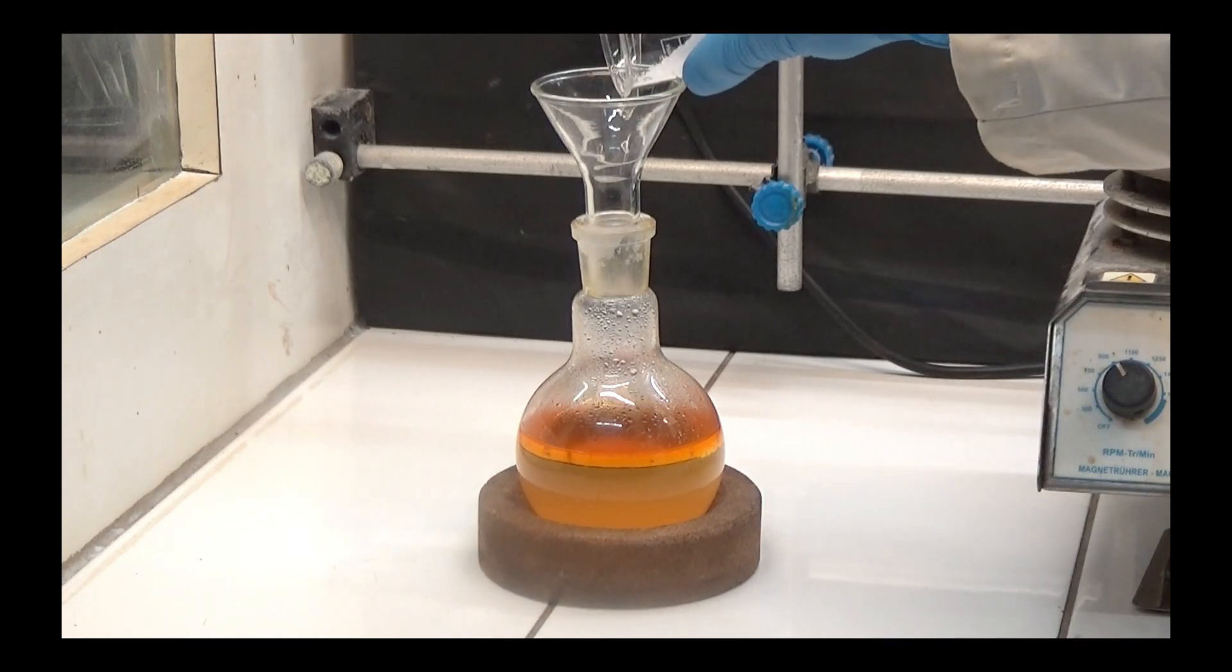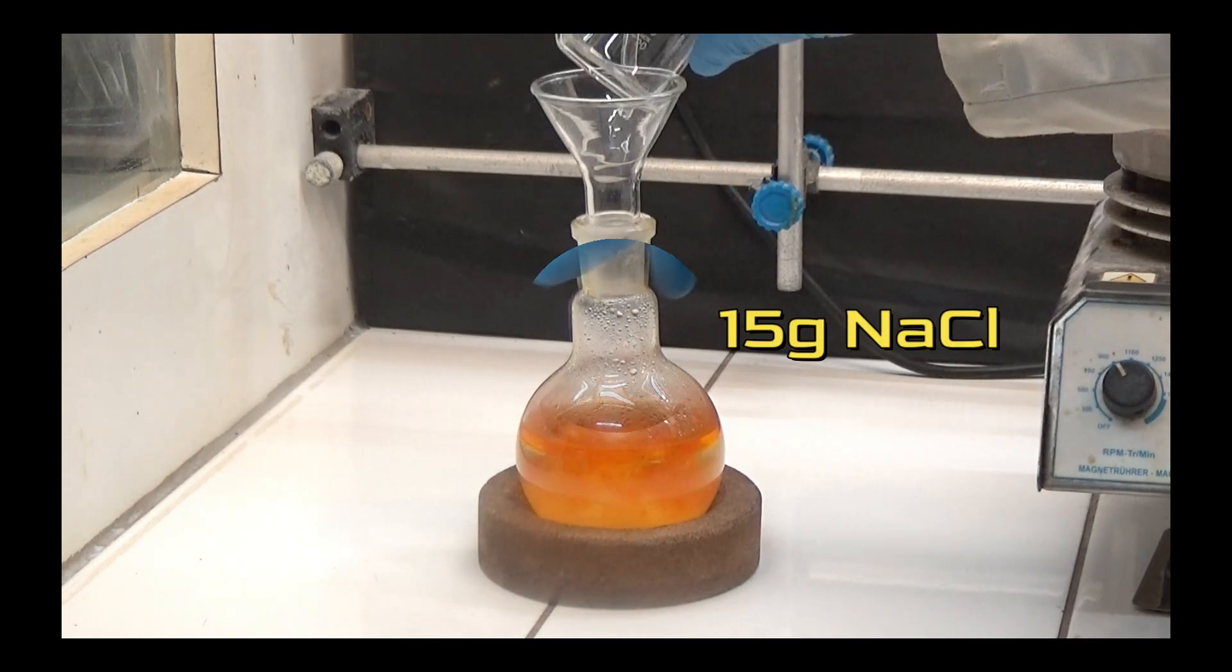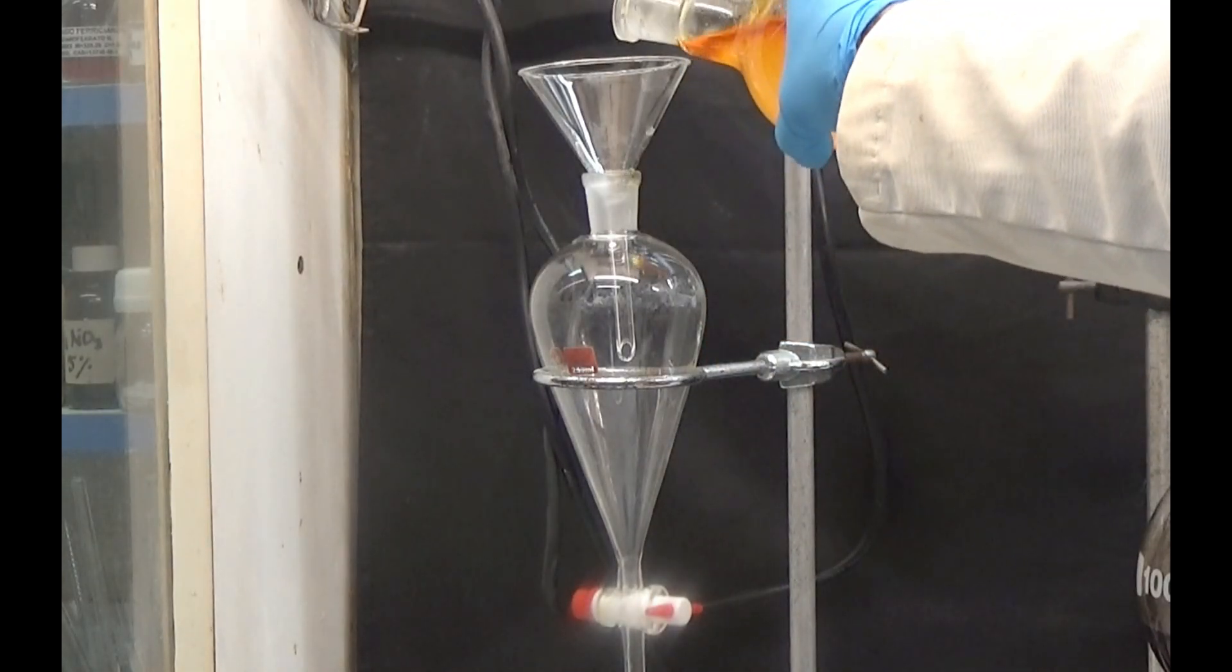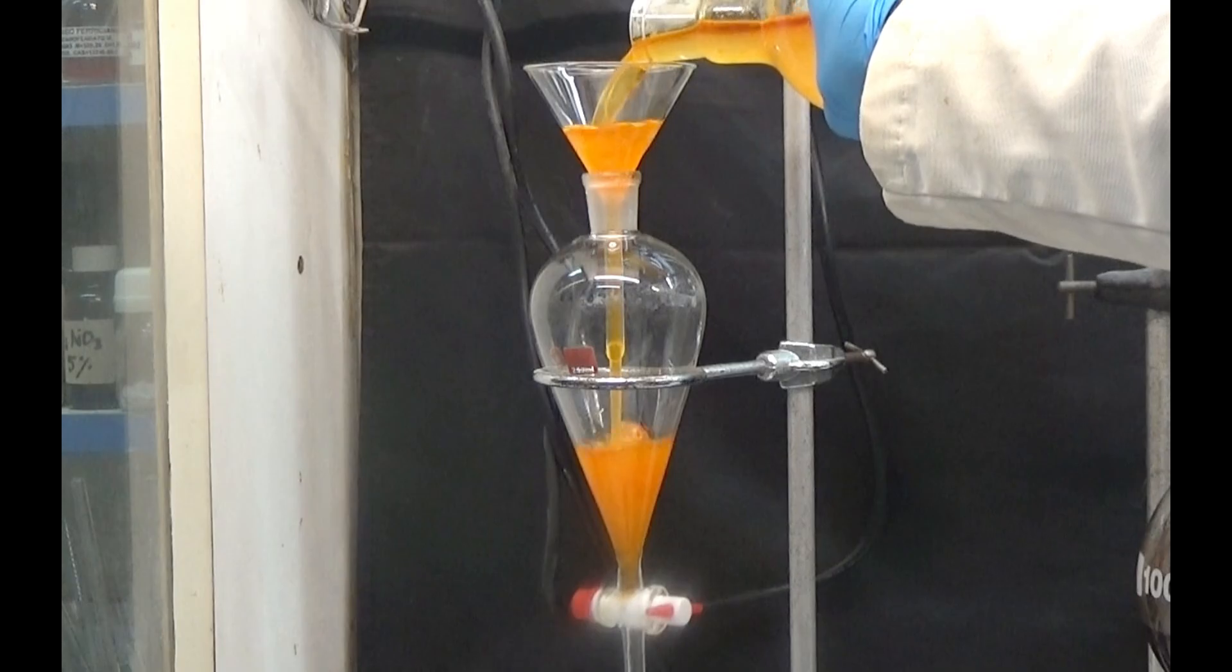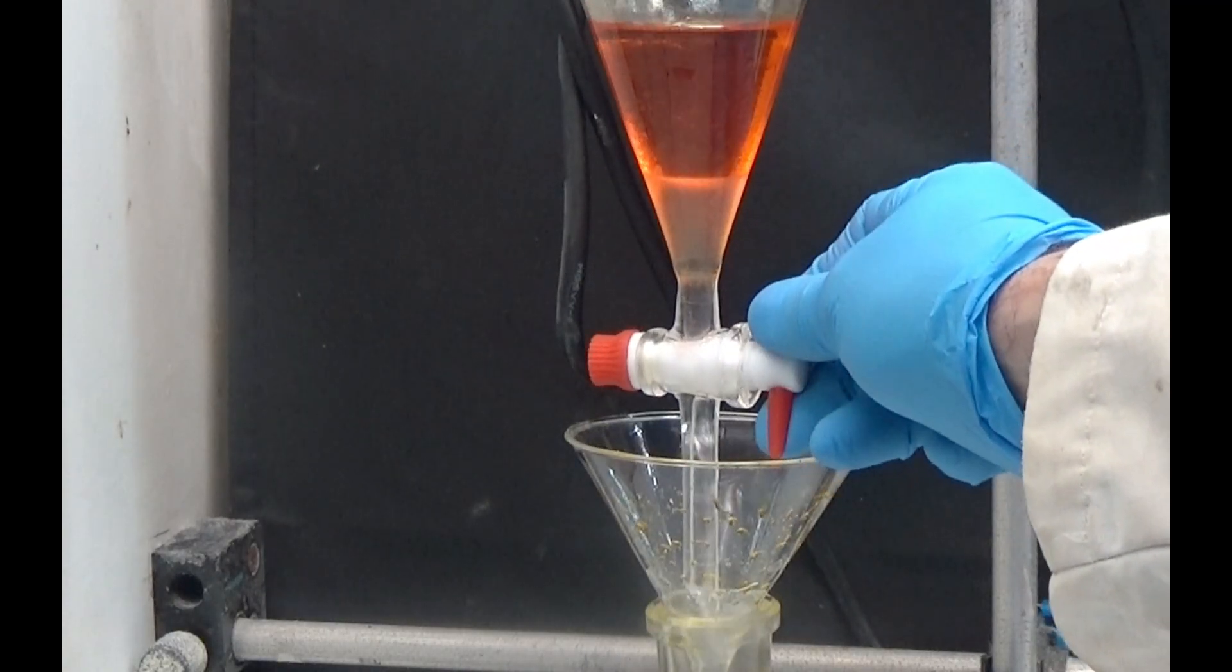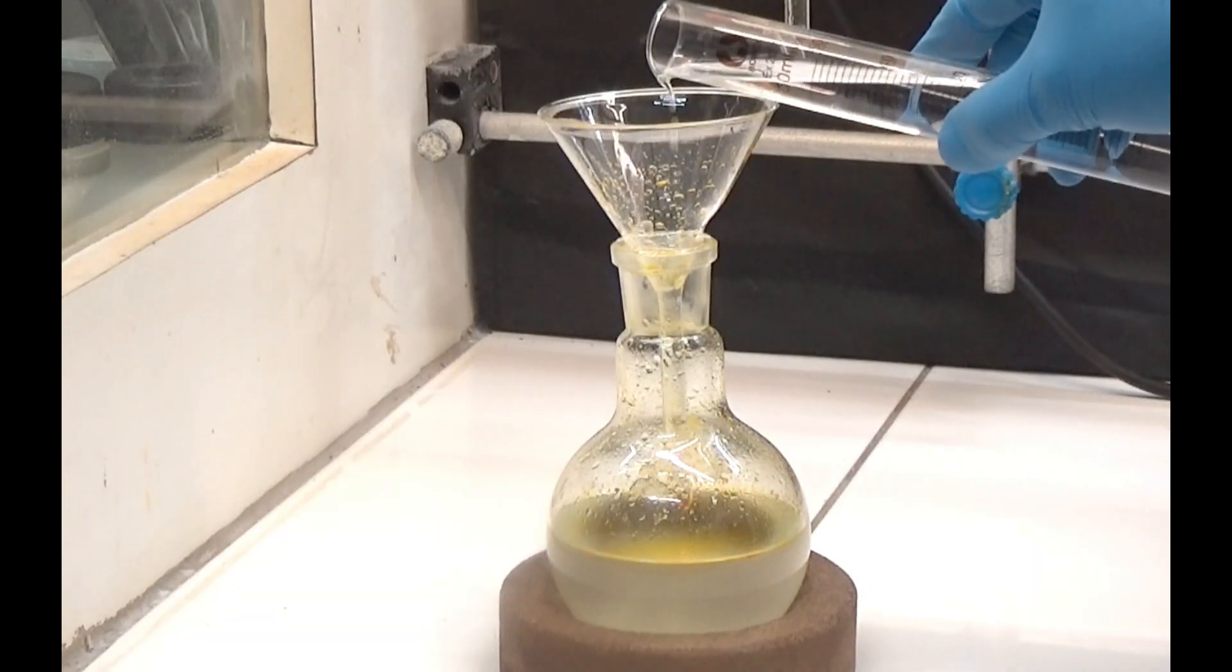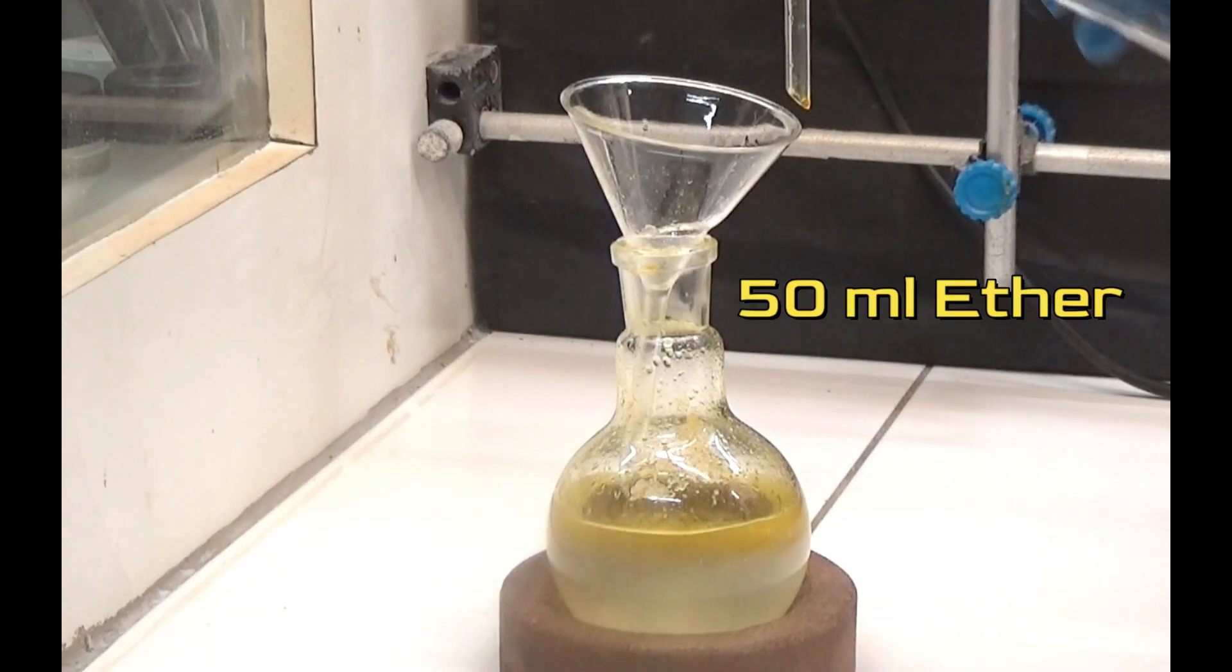Once the distillation is finished, we add 15 grams of sodium chloride to the distilled mixture and stir it to dissolve it. Use a separating funnel to separate the aqueous phase from the organic phase. Wash the aqueous phase with 50 milliliters of ether.